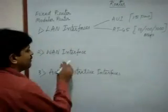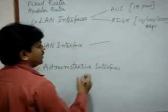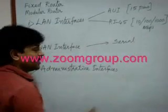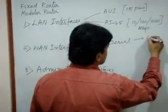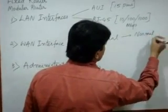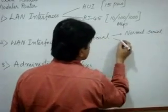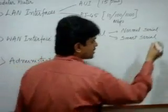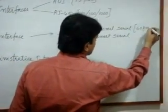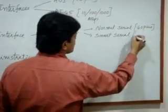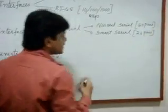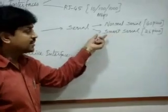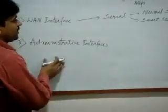Next we have WAN interfaces. One serial interface is used for WAN connectivity. There are two types of serial interfaces: the normal serial interface, which has 60 pins, and the smart serial interface, which has 26 pins. The function is the same for both; only the physical appearance is different. Both are used for connecting branch offices or remote locations.